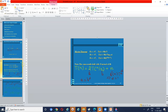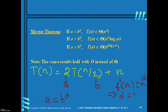The recurrence relation can be solved by backward substitution or by applying the Master Theorem. The Master Theorem states: if a < b^d, then T(n) ∈ Θ(n^d); if a = b^d, then T(n) ∈ Θ(n^d · log n base 2); if a > b^d, then T(n) ∈ Θ(n^(log a base b)), when f(n) ∈ Θ(n^d).